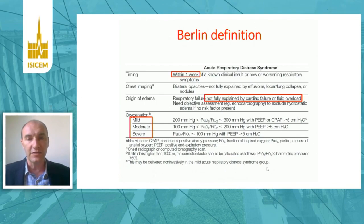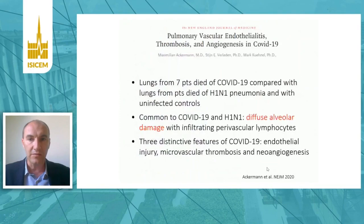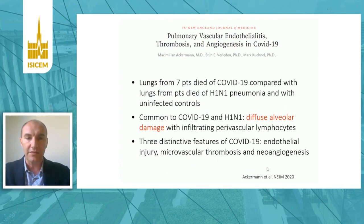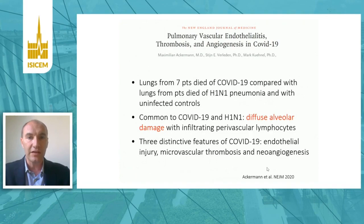The Berlin definition working group defined diffuse alveolar damage as the morphological hallmark of ARDS. A paper published in the New England Journal of Medicine compared lungs from seven patients who died from COVID-19 with lungs from seven patients who died of H1N1 pneumonia and uninfected controls. Common to both COVID-19 and H1N1 pneumonia was diffuse alveolar damage, confirming that COVID-19 patients fulfill all criteria for ARDS.